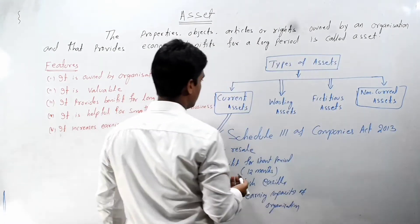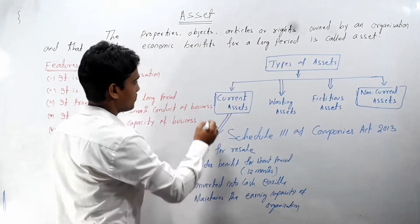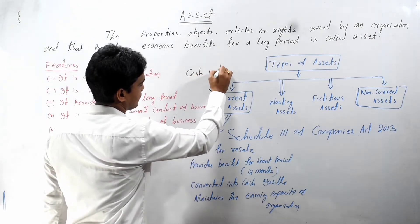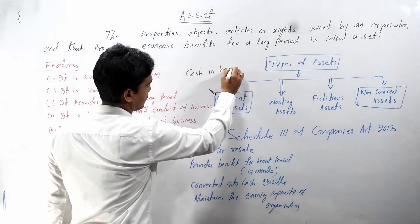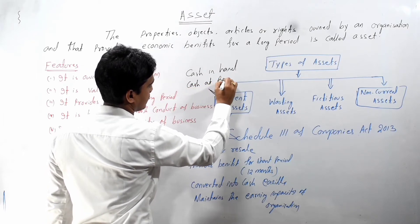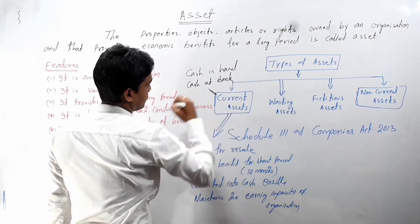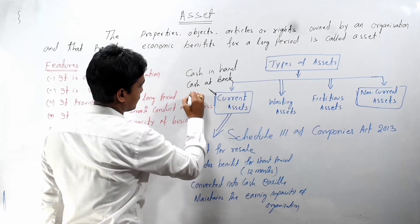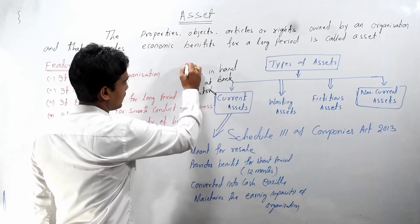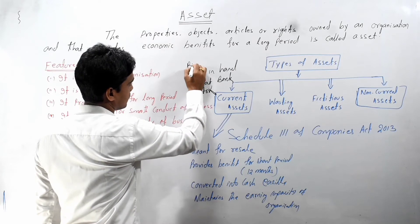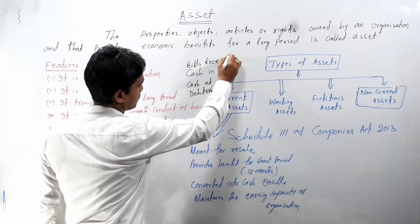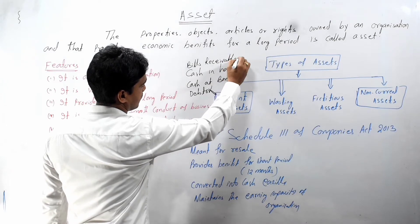Current asset examples are: cash in hand, cash at bank, debtor, bills receivables, etc.